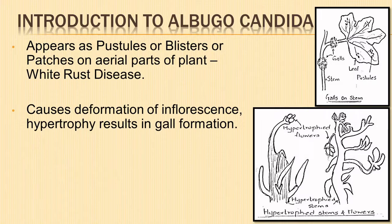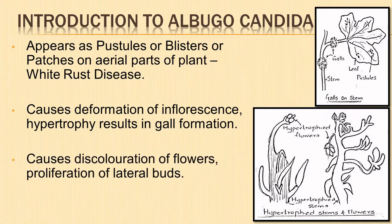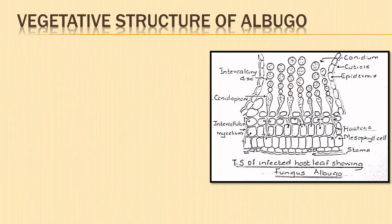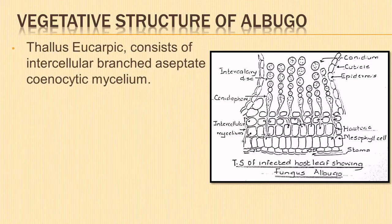The patches gradually turn powdery. The disease causes deformation of the inflorescence axis of the host. Increase in size of cells, known as hypertrophy, takes place, resulting in the formation of large galls on the host plant. In severe cases, discoloration of flowers and proliferation of the lateral buds are also seen. The carpals along with ovules are atrophied, causing sterility.